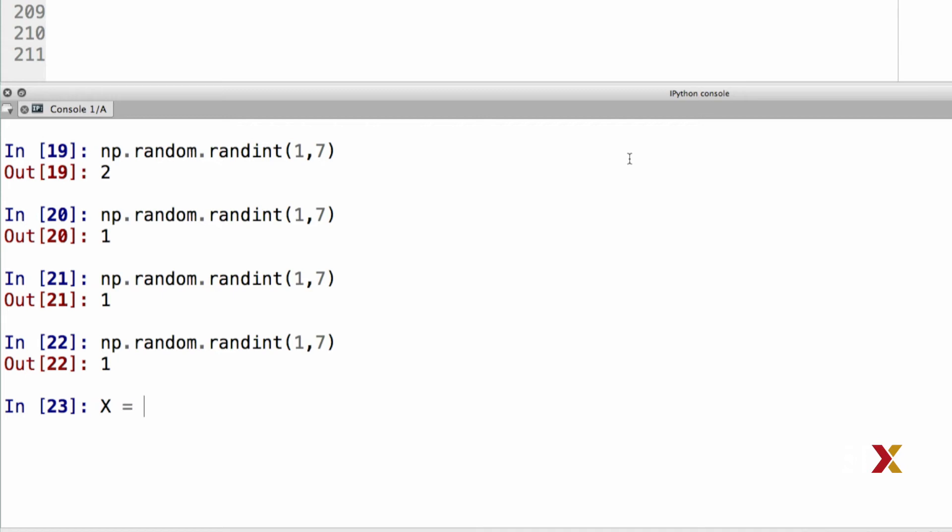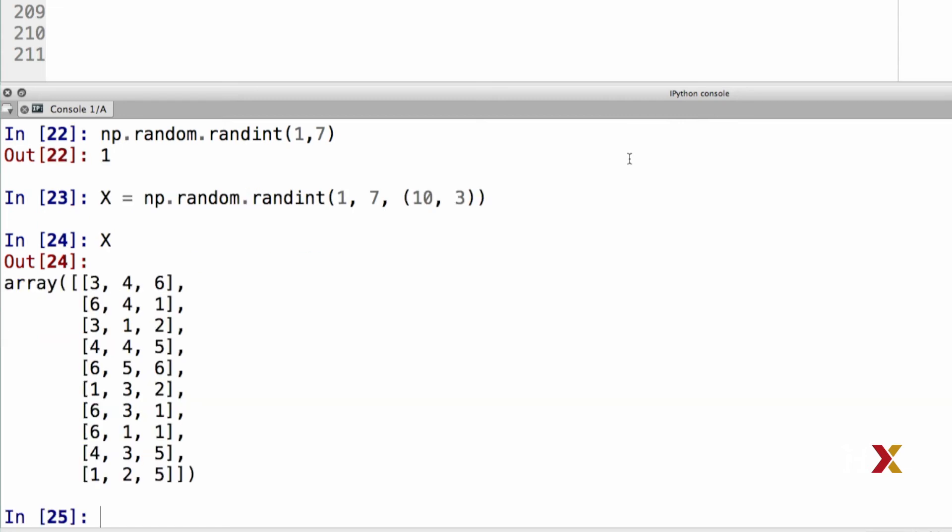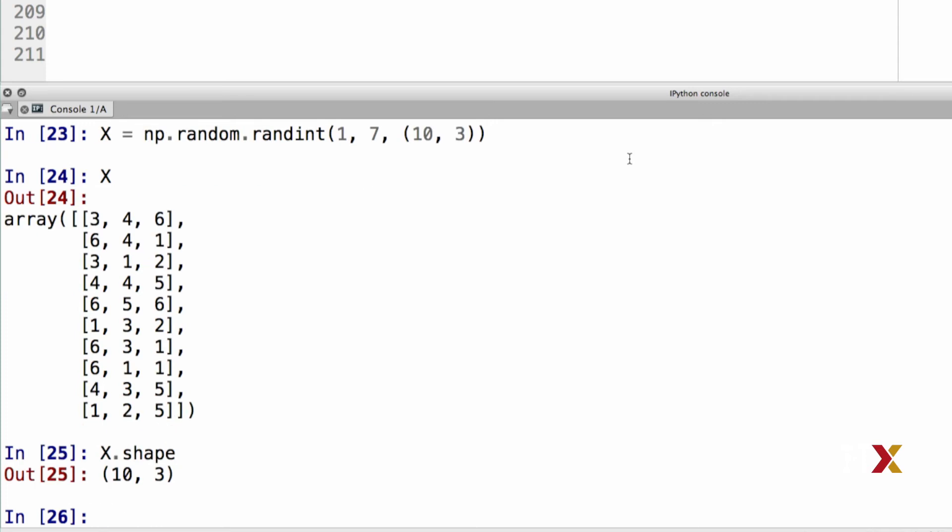I'm going to call this variable capital X. We'll type np.random.randint. We'll use the same start and end points, except that in this case, we need to provide a third argument, which is the size of the array. We would like to have ten rows and three columns. If we now look at the variable X, we see that it has ten rows and three columns. We can also check the shape of the array by using the shape function, x.shape. Python tells us X has ten rows and three columns.